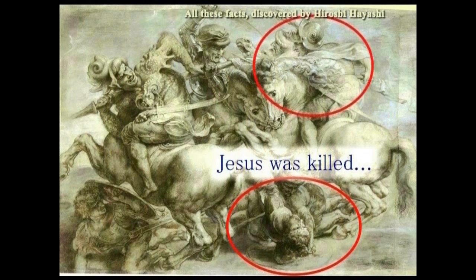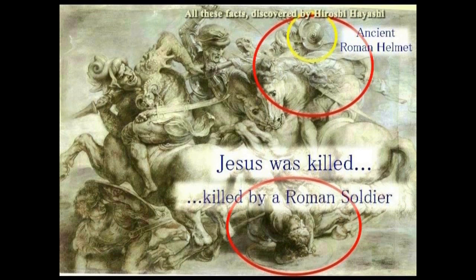そしてこのカイダマのイエスは人間側の馬に踏みつけられて、今まさに逝こうとしています。つまりこのような形で、カイダマのイエスはローマ軍に殺されたということを、このアンギャリの絵は示しています。